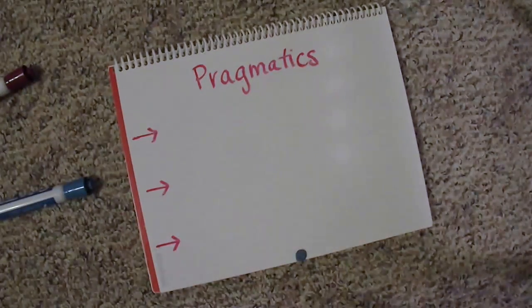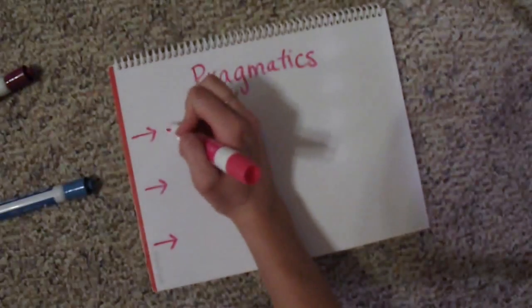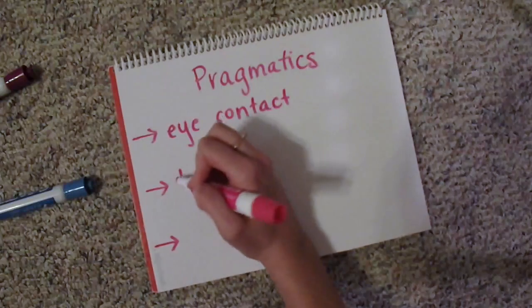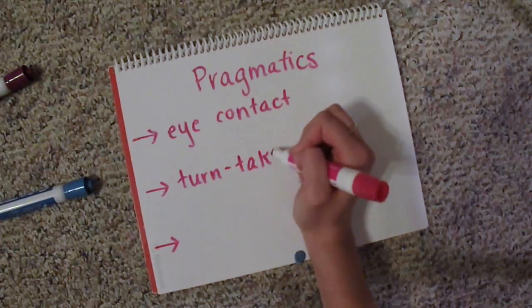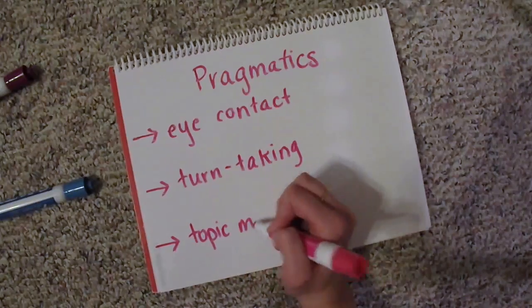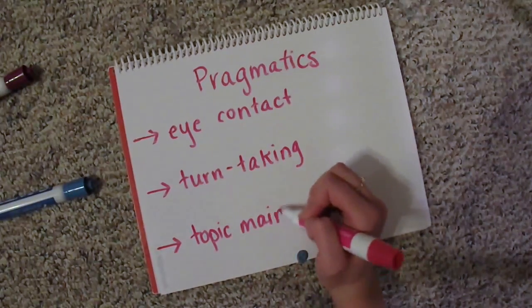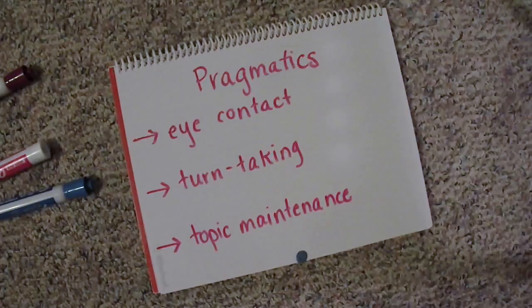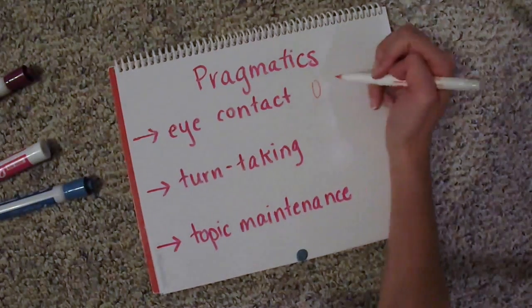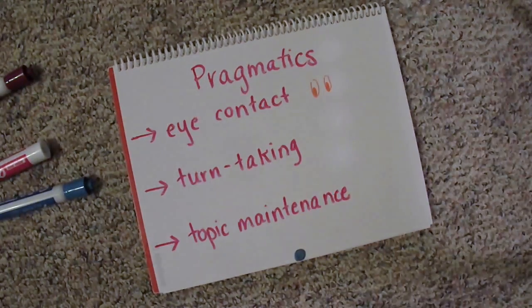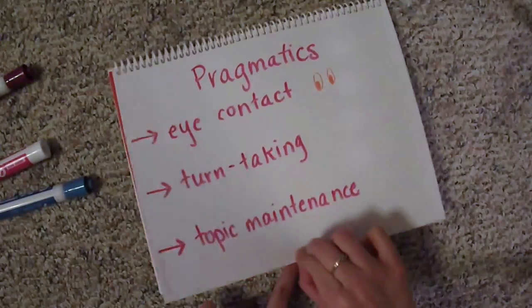Eye contact, turn taking, and topic maintenance are largely targeted with pragmatic therapy because they are easily managed and can greatly improve the patient's communication. Tasks can include cuing the patient to look at the clinician during conversation, suggesting they remember to make eye contact at the start and end of a sentence, or analyzing a conversation together and determining where turns should be made or when the topic should change.